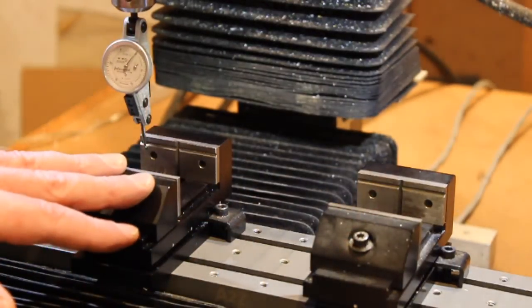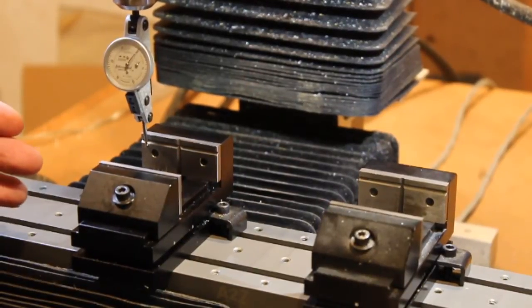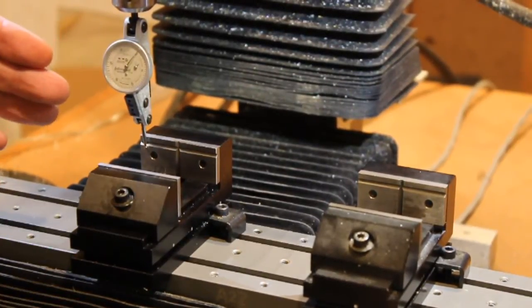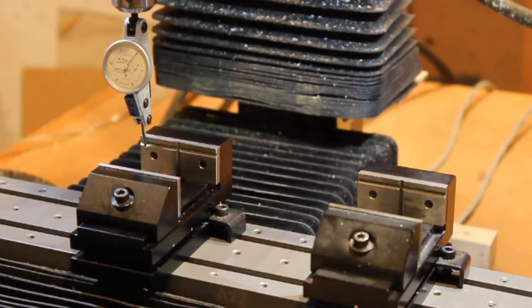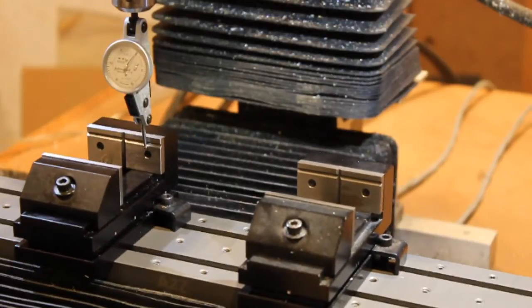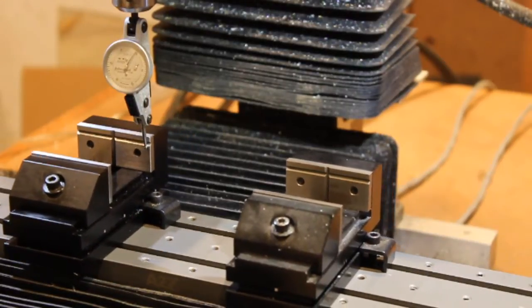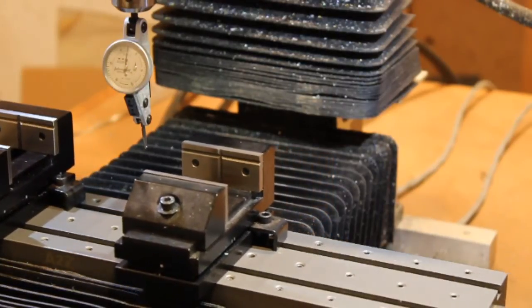This one we've already gotten right, so I brought the indicator back down to re-zero it. So now as I traverse this vise, the indicator stays at zero. So now we're going to come over to this one.